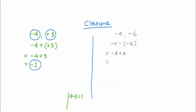Now we have minus 4 plus 6. One is minus, one is plus — different signs — so we do subtraction: 6 minus 4 equals 2. The answer gets the sign of the greater number, which is 6, and the sign is plus, so the answer is plus 2. Minus 4, minus 6, and plus 2 are all integers, so integers are closed under subtraction. Let's take another example.